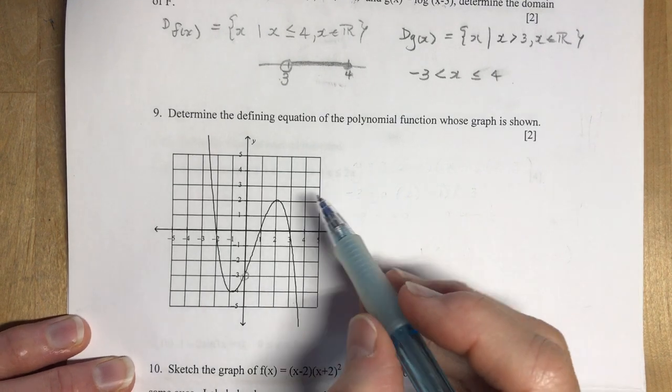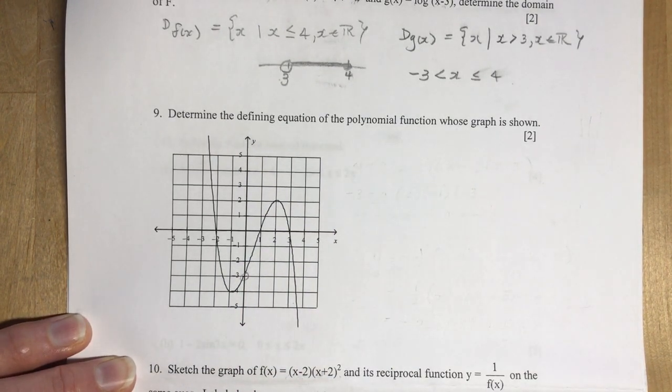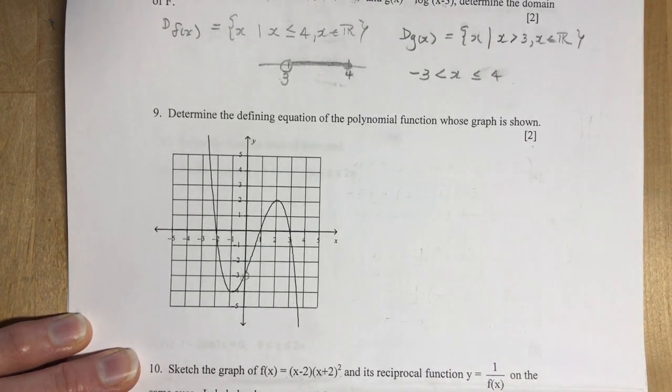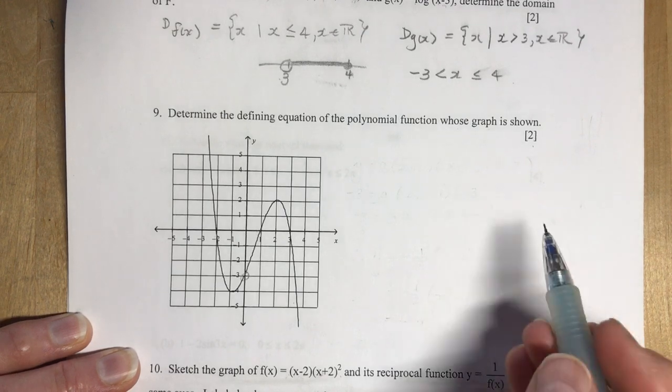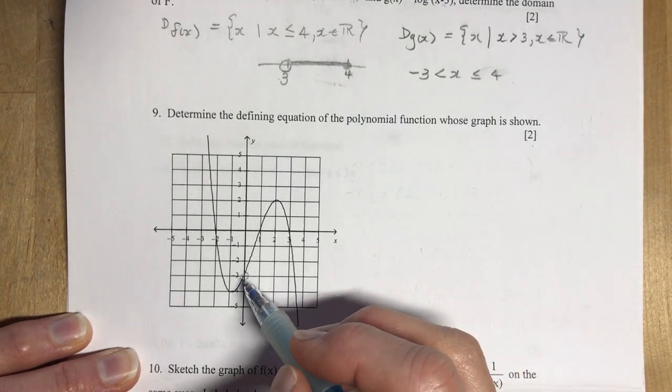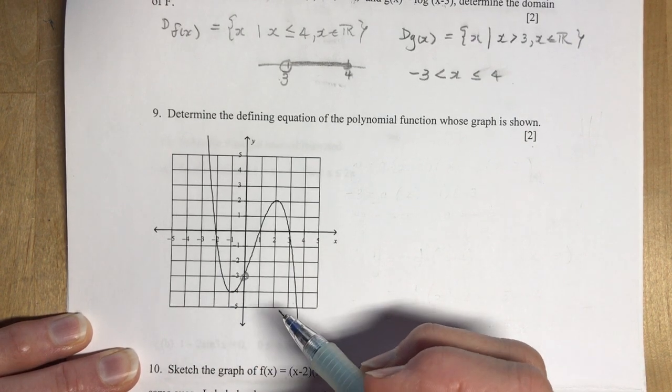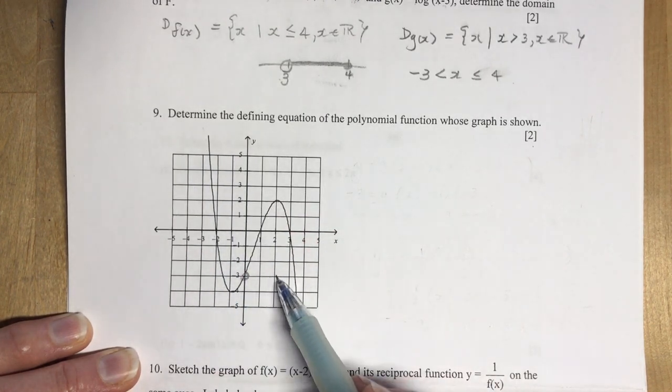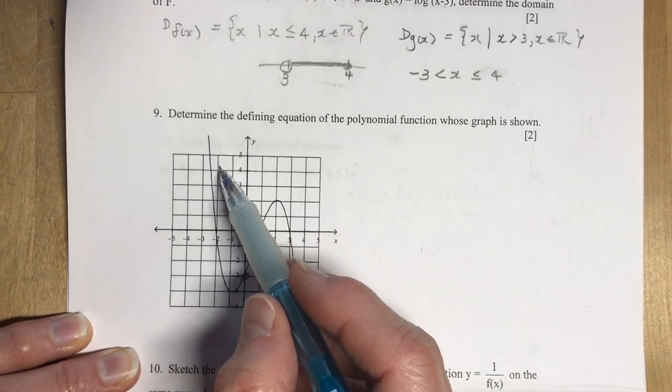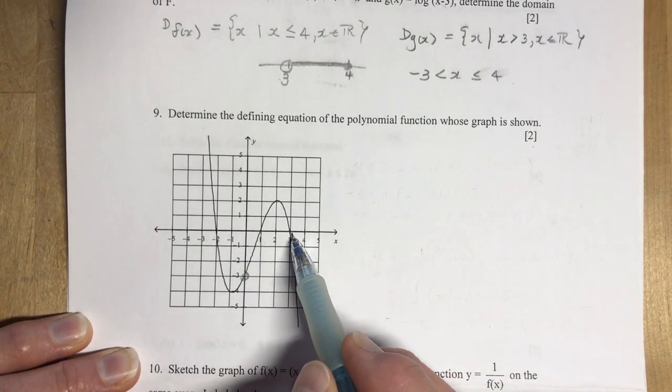Let's get right into number 9. It says, determine the defining equation of the polynomial function whose graph is shown. Two-part question, not a lot of marks for this. I'm going to do some fancy work here. You need to look at what you see here already that you know. The first thing I would say is that it's going to be a negative cubic function, negative because we're starting in this quadrant, it slopes like a negative line, and cubic because it has three single roots.